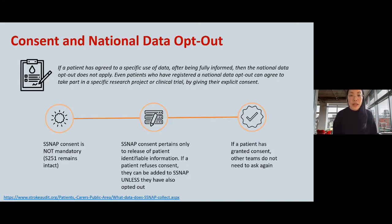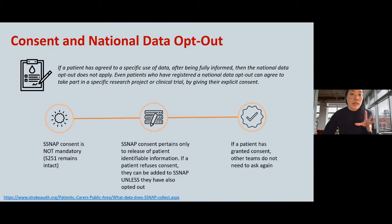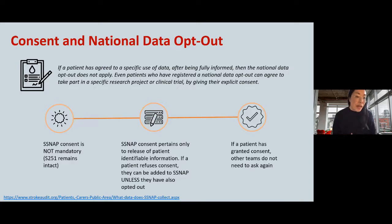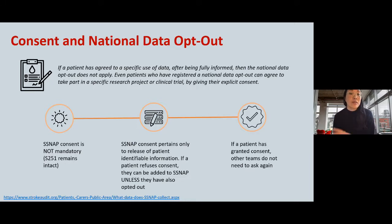Consent is different from the National Opt-Out. To comply with the National Data Opt-Out, you don't need to add consent to your internal policies and practices. However, according to the NHS National Data Opt-Out website: if a patient has agreed to a specific use of data after being fully informed, then the National Data Opt-Out does not apply. Each patient, even those who have registered a National Opt-Out, can agree to take part by giving explicit consent — and that includes SNAP. Consent does override opt-out.